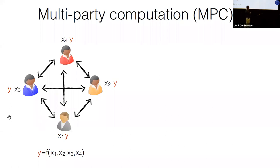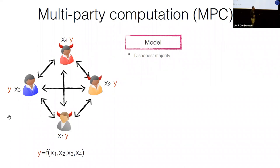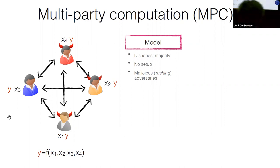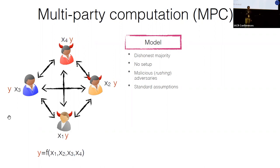We are at the fifth session. There are many models in which you can study multiparty computation. The model we consider has dishonest majority. We assume no setup, parties are fully corrupted and they behave in a rushing way — in each round, the adversarial parties wait to receive the messages of honest parties and then they speak. Our protocols rely on standard assumptions, specifically trapdoor permutations, and we only deal with black-box simulation.